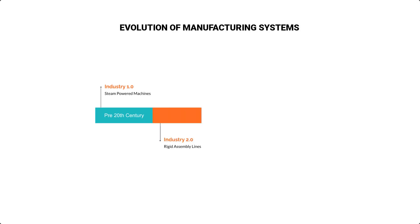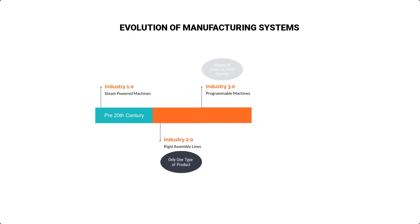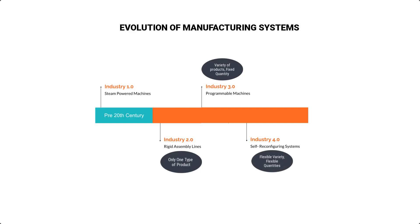Initially, manufacturing systems consisted of production lines with machines that were dedicated to the performance of specific tasks so that only one type of product could be produced. Next, there was the introduction of programmable machines on the factory floor, and this allowed the production of a variety of different products, but still it offered no flexibility in how much of the same type of product the system could produce. But today, with Industry 4.0 technologies, manufacturing systems are able to self-adapt their hardware and software components to follow ever-changing market requirements of both type and quantity of the products.